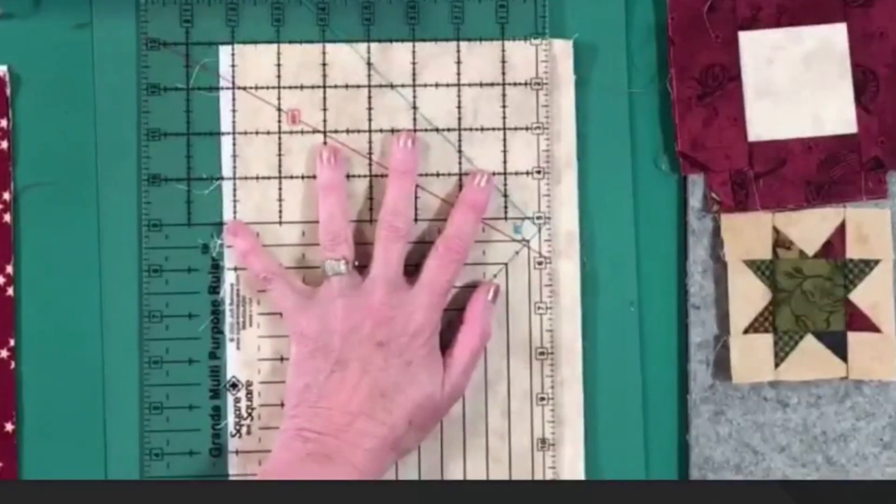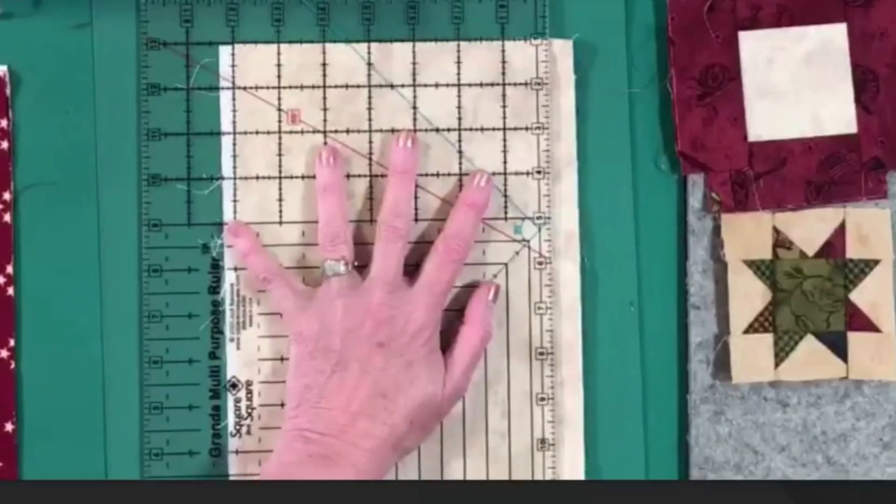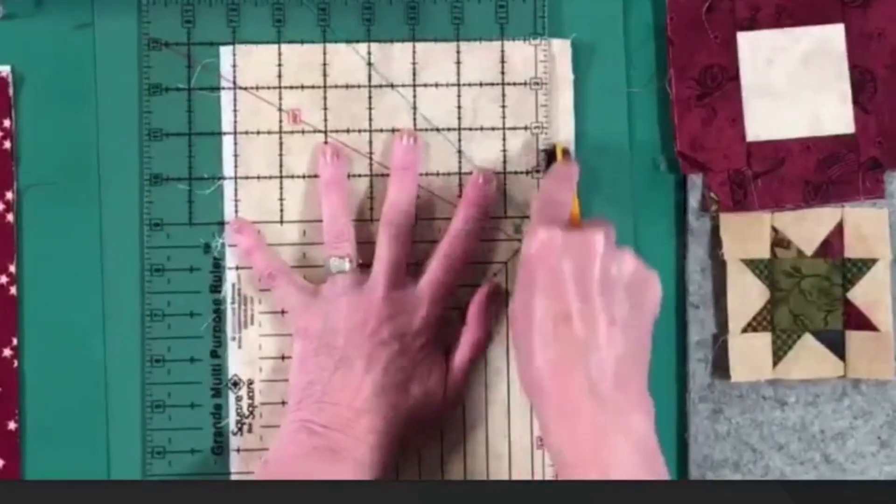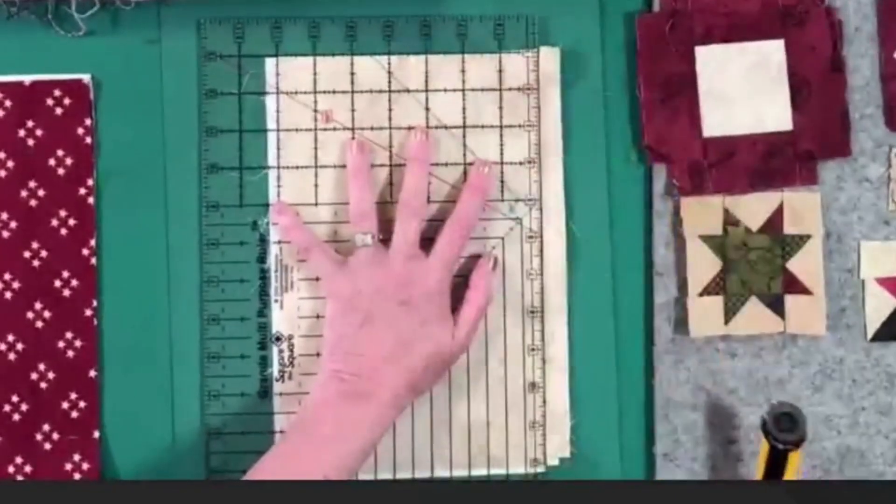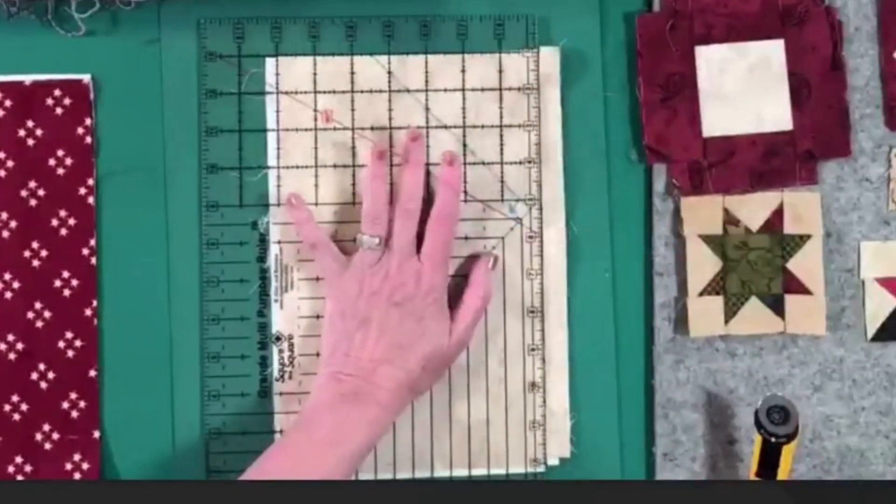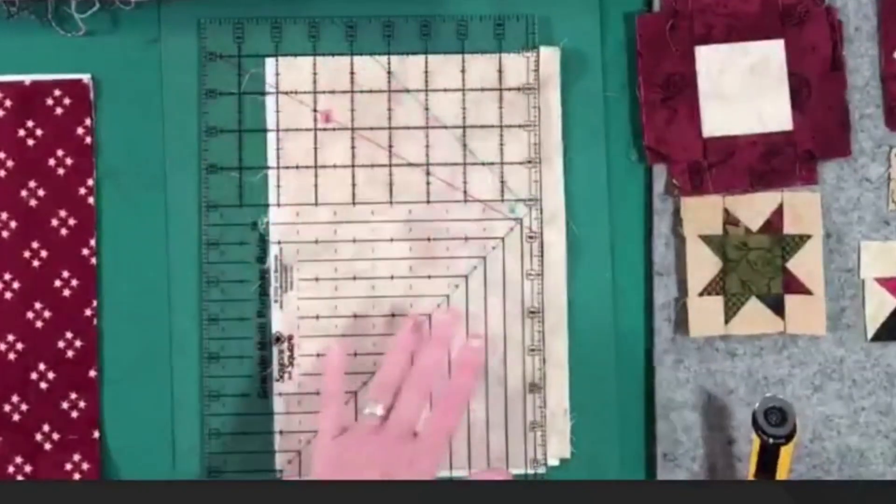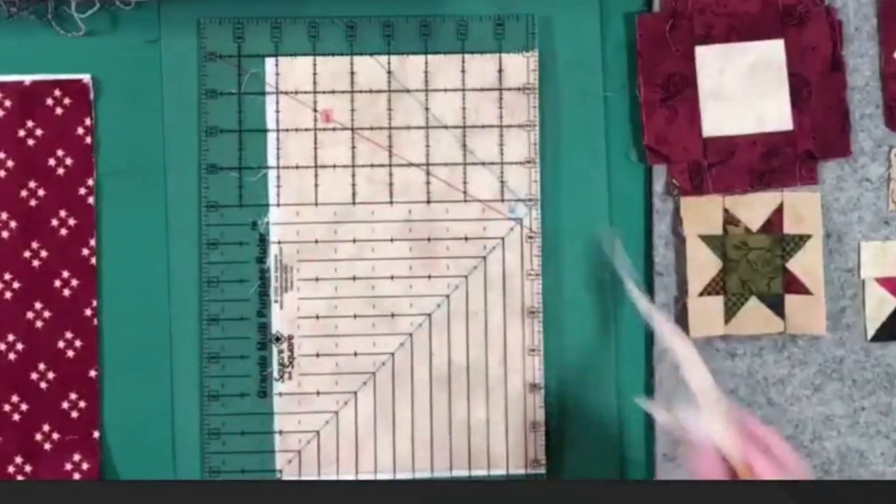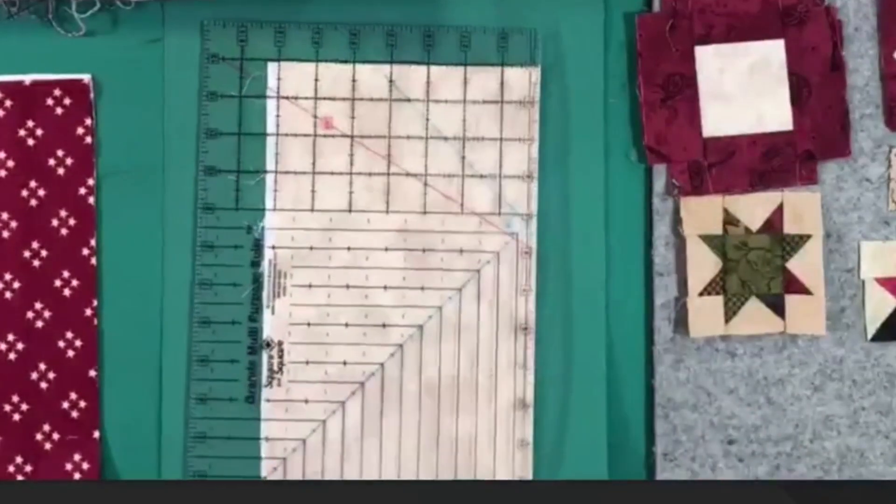I come down here and start where there's no fabric. And I push my rotary cutter up right next to the edge of the ruler and I start cutting just like that. Holding it firm. Not too firm. You don't want it to slip. Not too loose. You don't want it to slip.